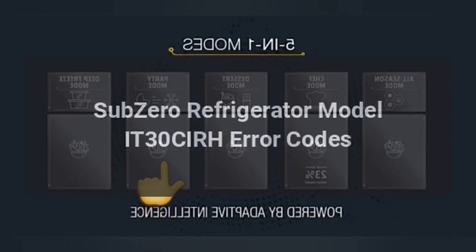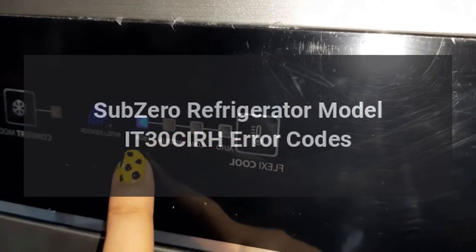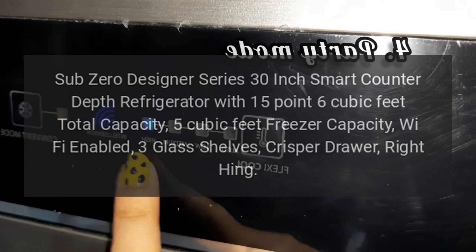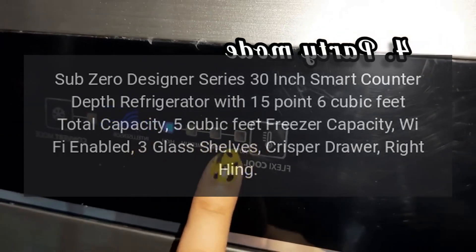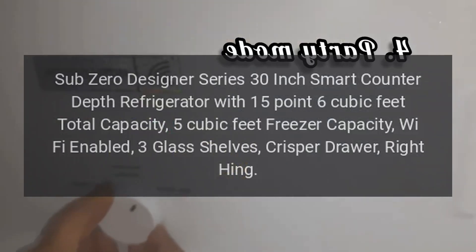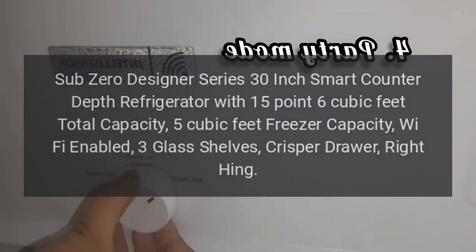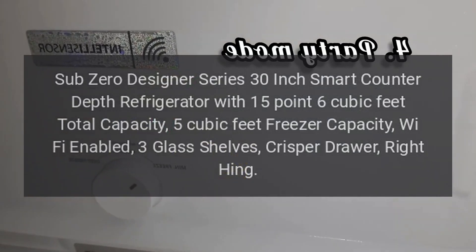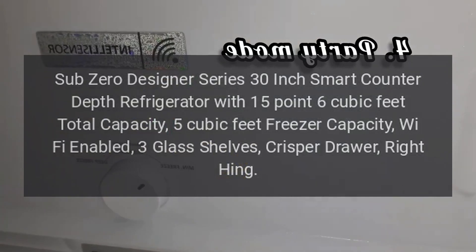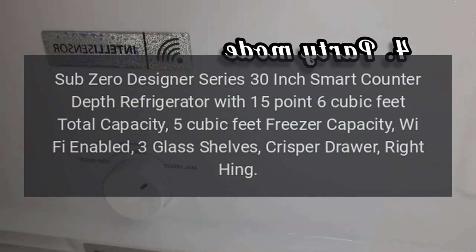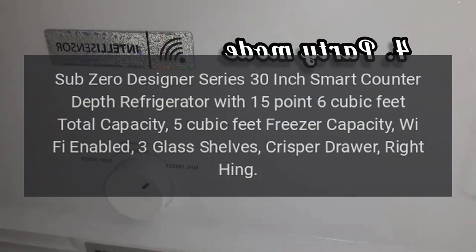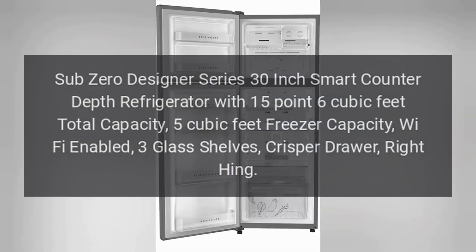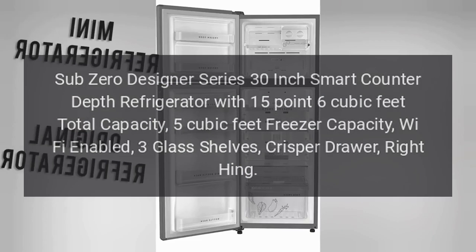Sub-Zero Refrigerator Model IT30CIRH Error Codes. Sub-Zero Designer Series 30-Inch Smart Counter Depth Refrigerator with 15.6 cubic feet total capacity, 5 cubic feet freezer capacity, Wi-Fi enabled, 3 glass shelves, CRISPR drawer, right hinge.